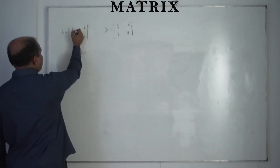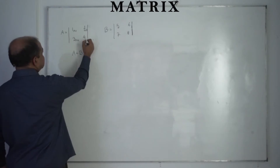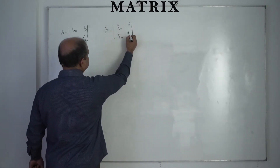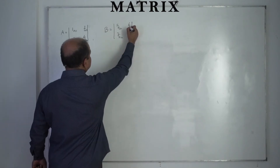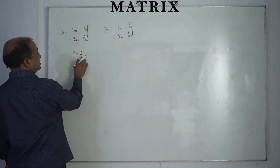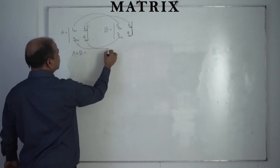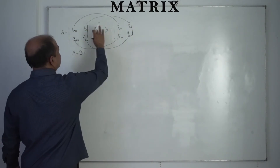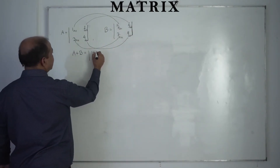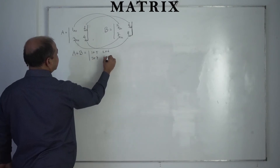Let's look at matrix addition. In matrix A, the positions are: 1,1 and 1,2 in row 1; and 2,1 and 2,2 in row 2. In matrix B, similarly: position 1,1, position 2,1, position 2,2, and position 1,2. For addition, elements at the same position are added together: 1,1 with 1,1 and 1,2 with 1,2. So the result is: 1+5, 2+6, 3+7, and 4+8 for the corresponding positions in the 2×2 result matrix.